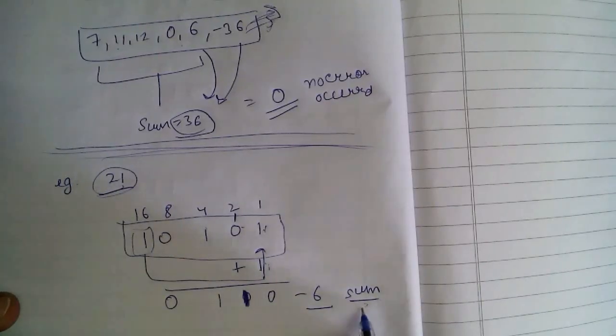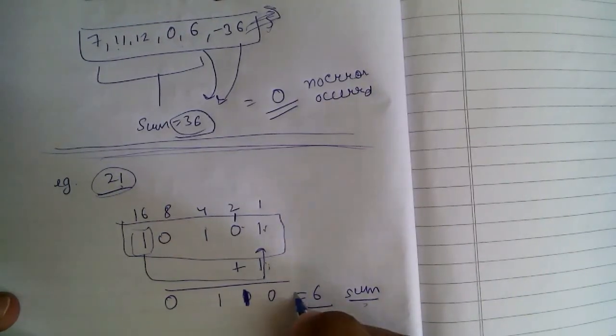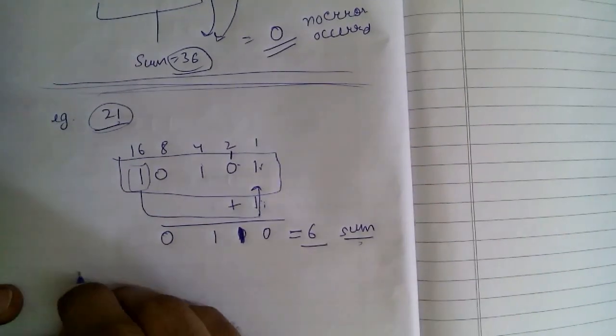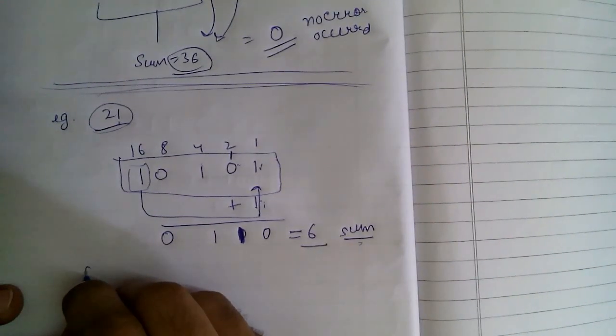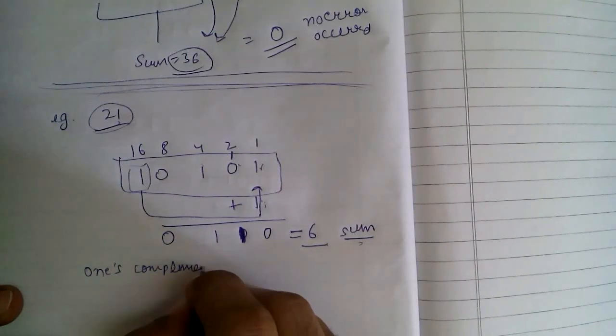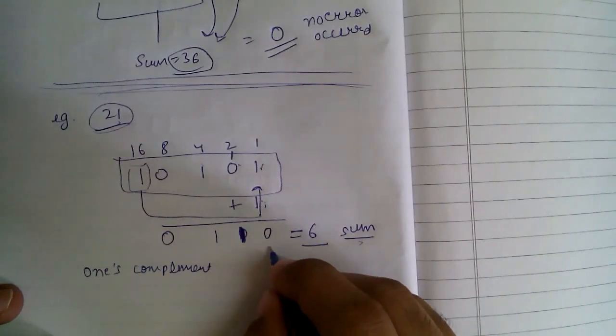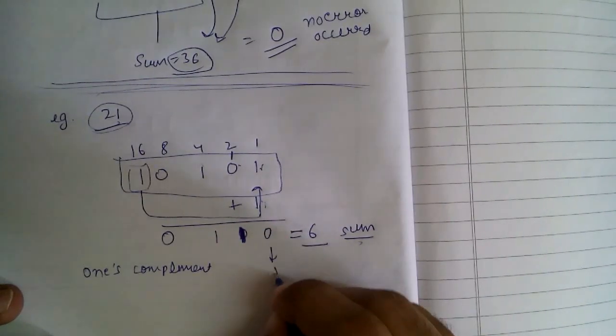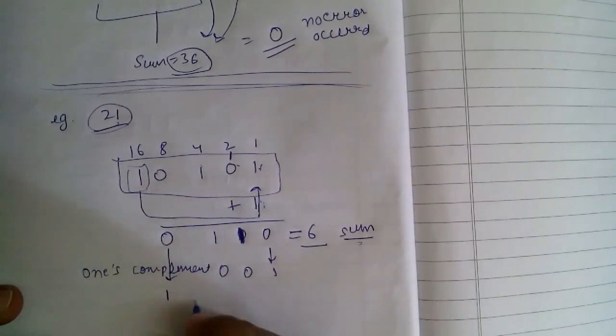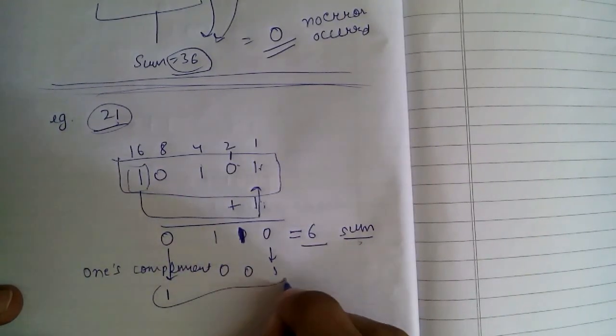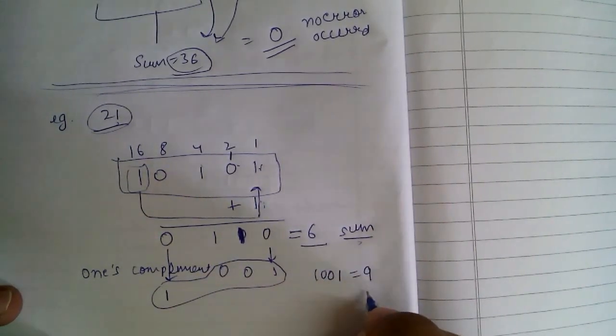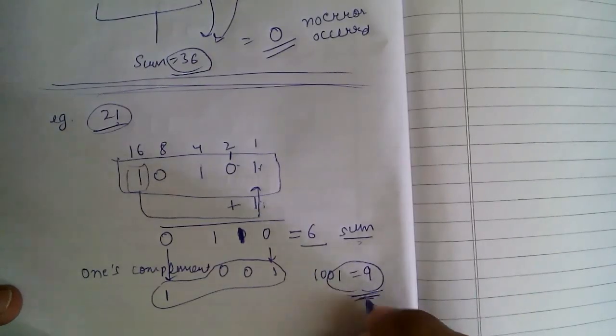This is the sum. To get checksum, we need to complement this. As you already know, 1's complement can be obtained by inverting the bits. 0 changes into 1, each bit inverts. So this becomes 1001, which is 9.